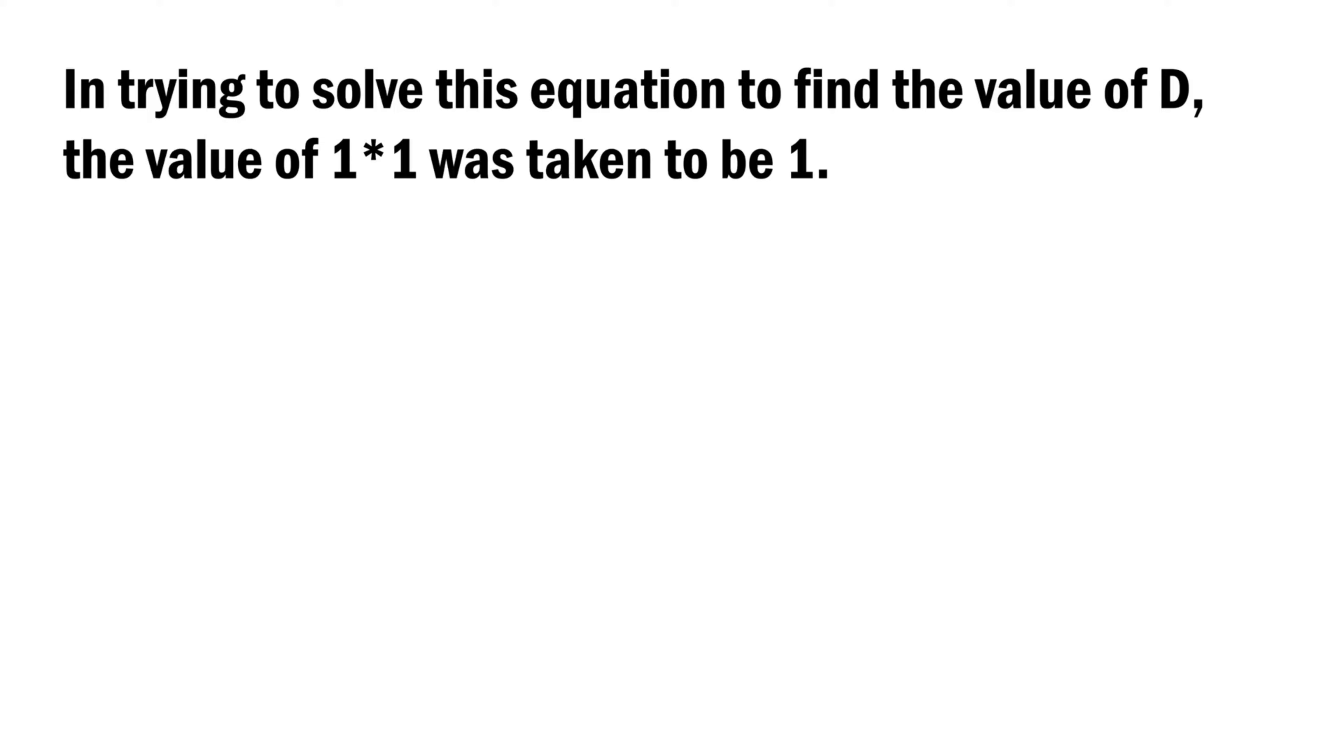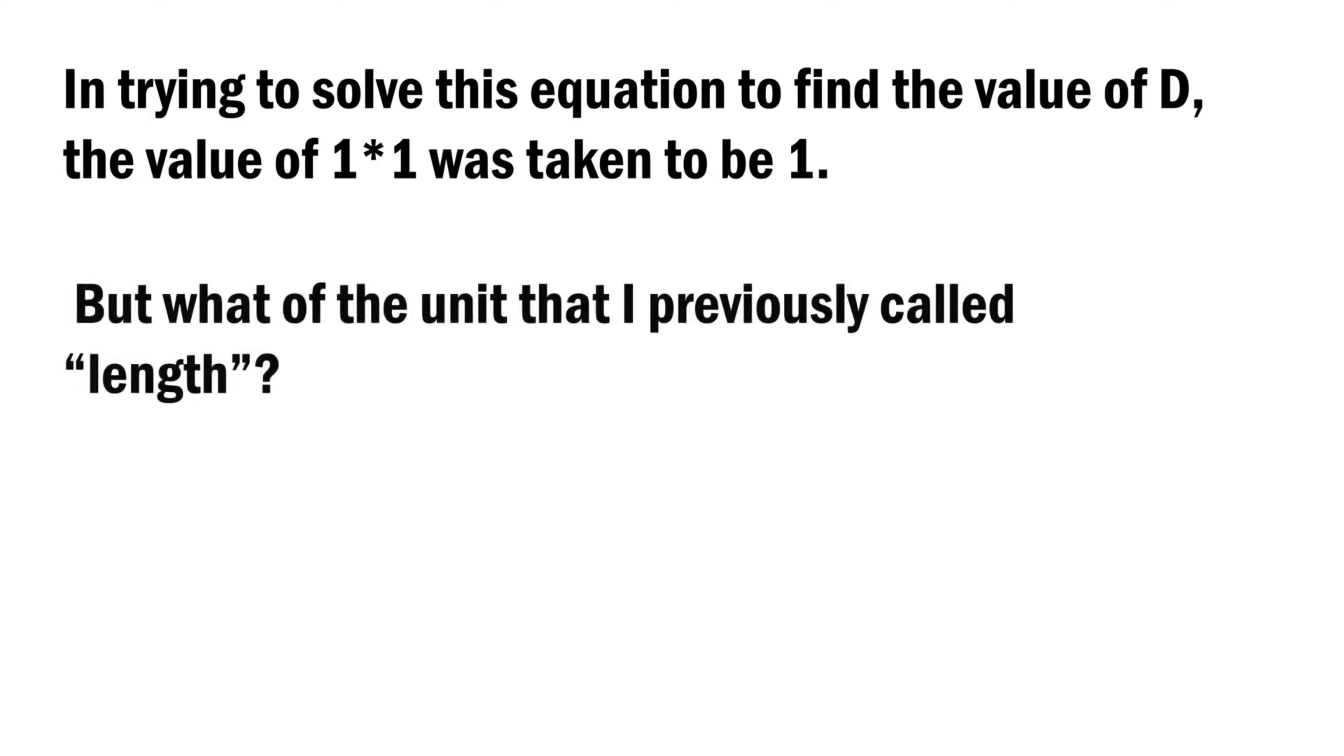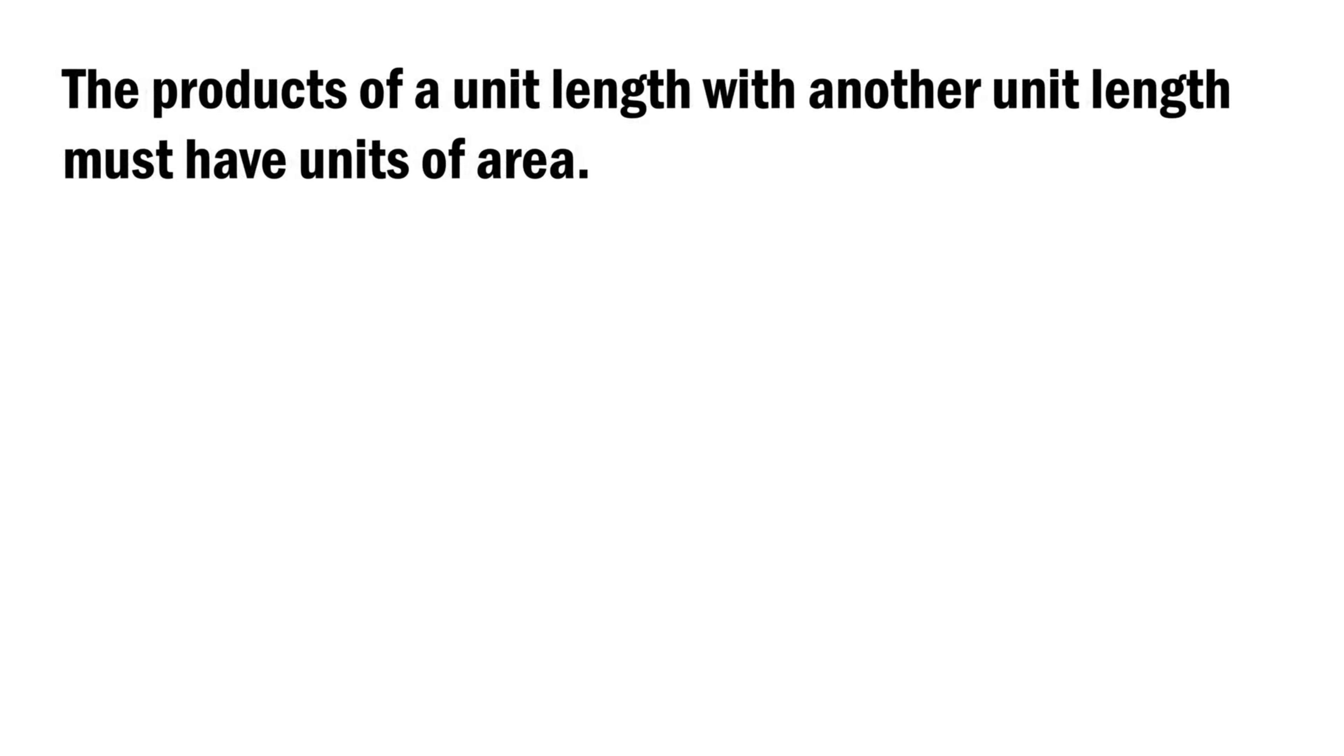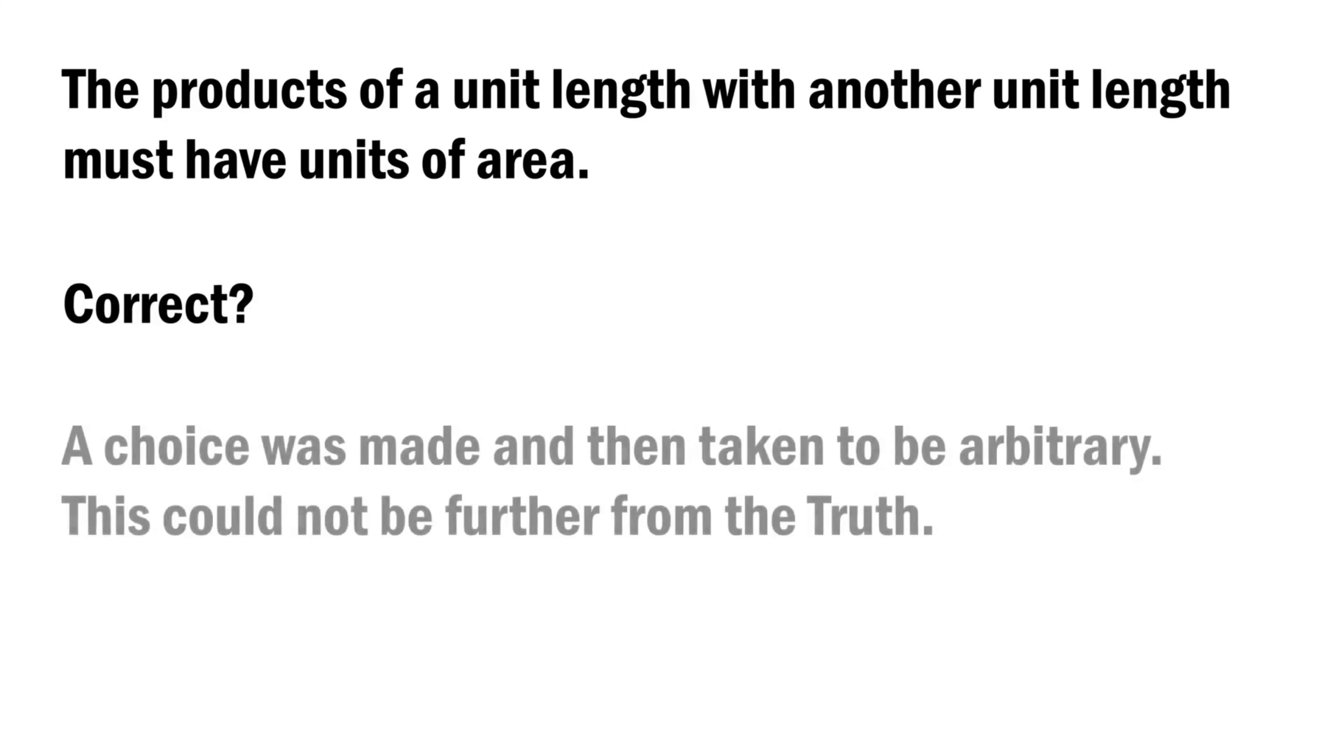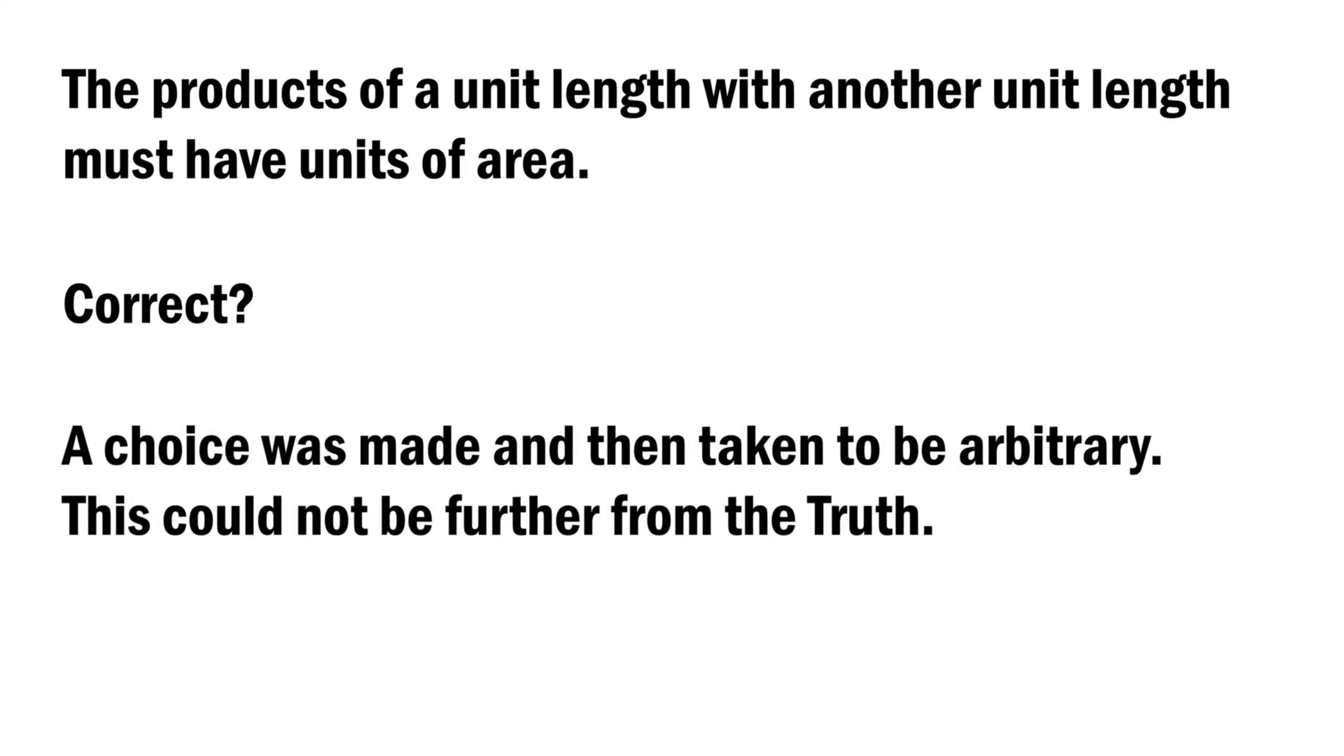The value of 1 times 1 was taken to be 1. But what of the unit that I previously called length? The products of a unit length with another unit length must have units of area. Correct? A choice was made and then taken to be arbitrary. This could not be farther from the truth.